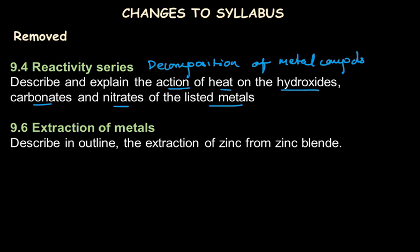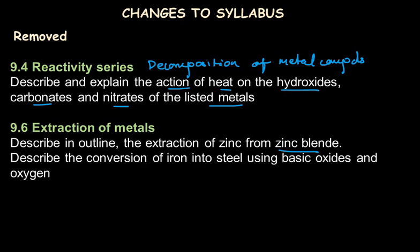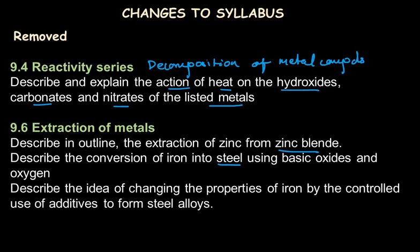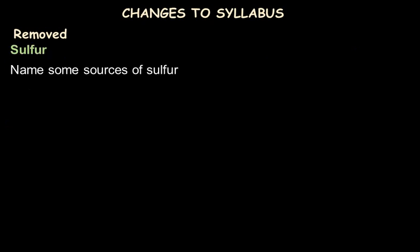From extraction of metals, the extraction of zinc from zinc blende is fully removed, though extraction of iron and aluminium remain. The conversion of iron into steel using basic oxides and oxygen — the steel-making process — is also removed. Additionally, the properties of iron changed by controlled use of additives to form steel alloys, including different types of steel alloys, their properties and composition, is fully removed.